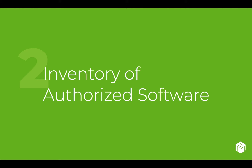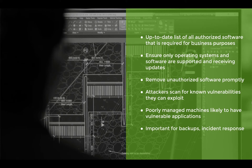Similar to controlling and inventorying your hardware, control two is an inventory of authorized software on your network. An authorized software inventory should be an up-to-date list of all authorized software used in your company environment that has a legitimate business purpose. We want to minimize risk — if software is not needed, we don't want it. We want software that has a legitimate business purpose installed, and nothing extra: no extra games, no extra radio apps. It becomes a risk to our environment.